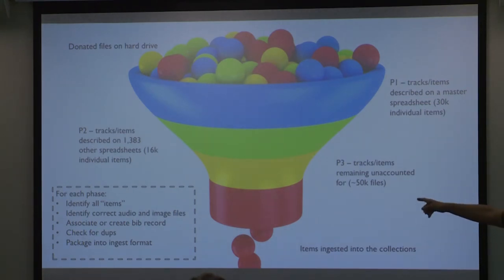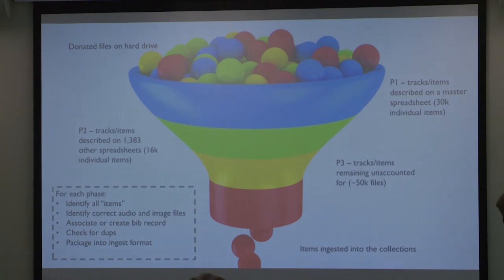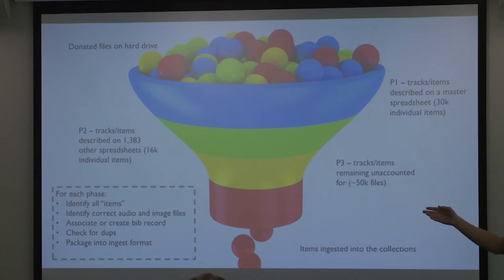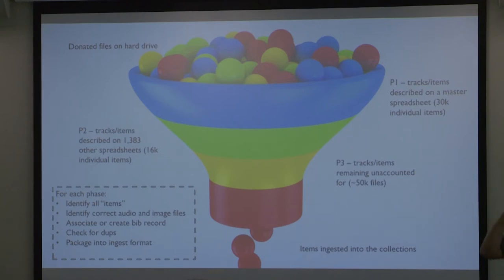For each phase we had to identify every item — this song that exists conceptually on a spreadsheet has a corresponding file, and all those tracks on that album are available and accounted for, with an image maybe or not. Just trying to sift it through a net and turn it into something sane. We wanted to identify the right ones, make records — frankly for me that's the magical bit — look for dupes, which were the biggest thing of this project, and then package them up neatly and send them off.